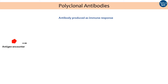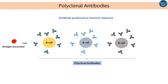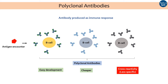Usually, an antigen induces different types of B cells to produce multiple types of antibodies called polyclonal antibodies. Their development is easier and less expensive. But one of the major problems with polyclonal antibodies is their high cross-reactivity with other antigens. They target multiple epitopes of an antigen and sometimes other antigens too.